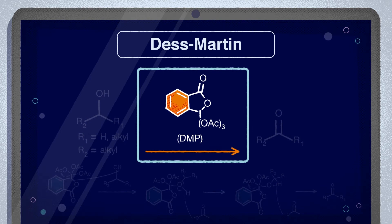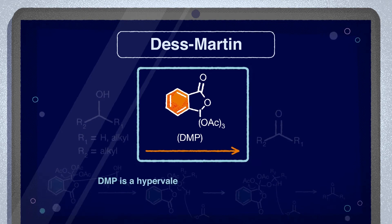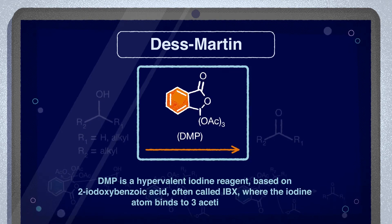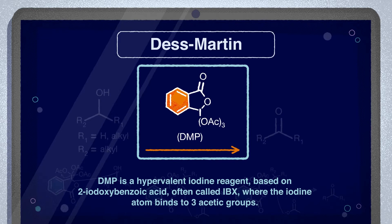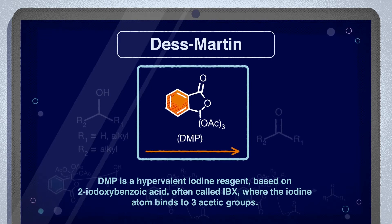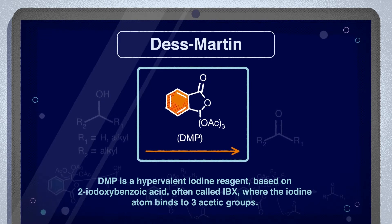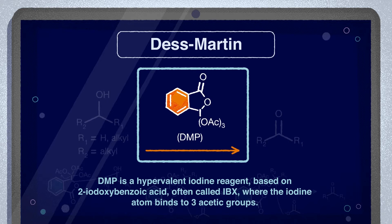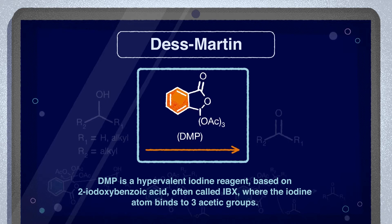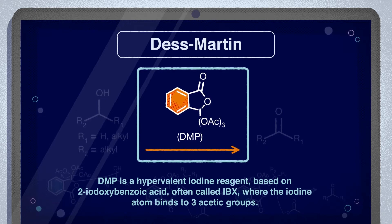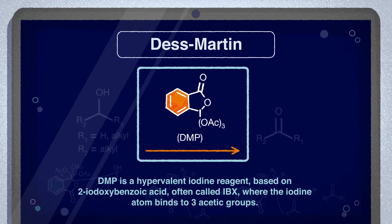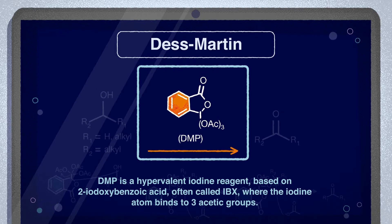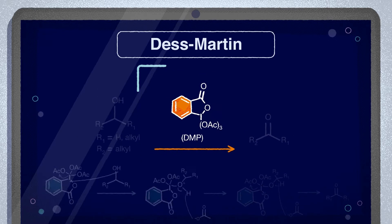DMP is a hypervalent iodine reagent based on 2-iodoxybenzoic acid, often called IBX, where the iodine atom binds to three acetic groups. These bonds have a significant activating effect on the iodine atom — that is, the actual redox partner for the oxidation of the alcohol.